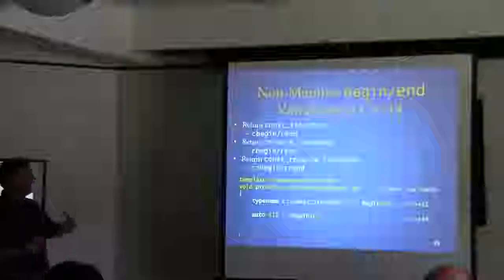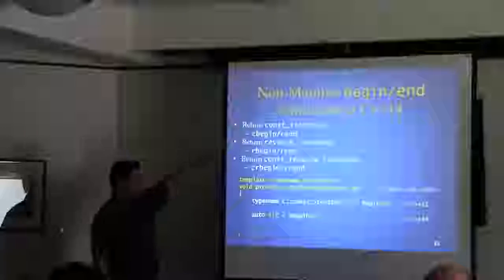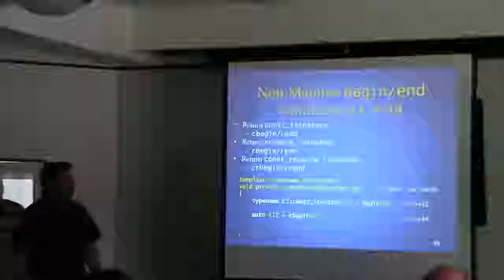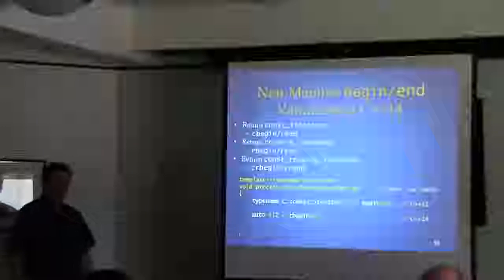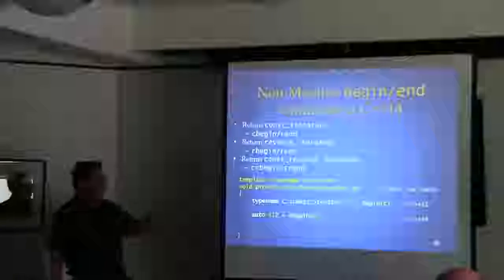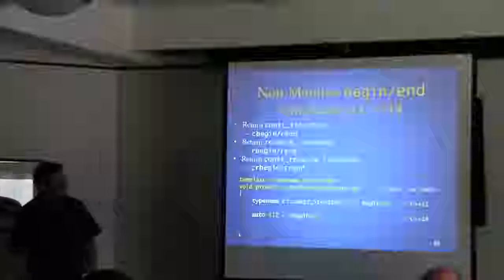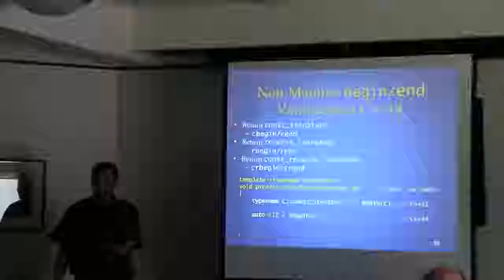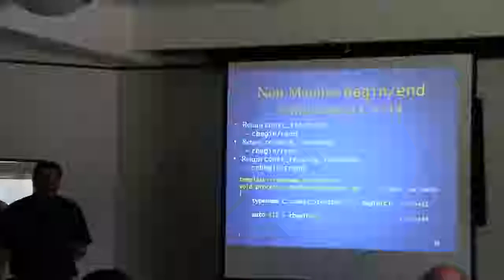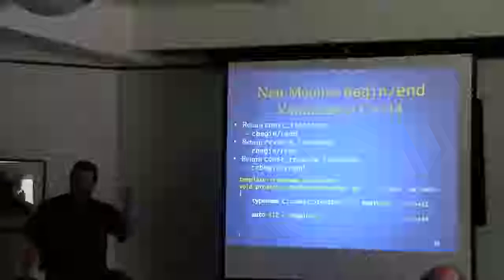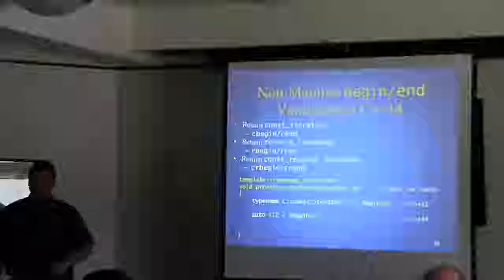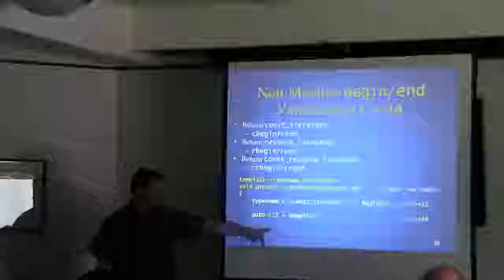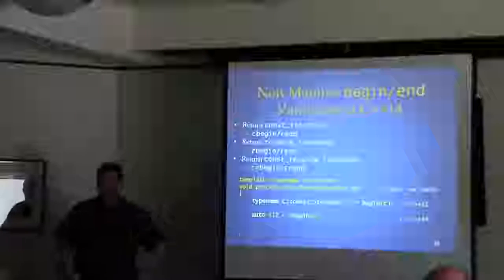Here's the first C++14 slide. C++14 adds the natural variations cbegin and cend as non-member functions. Now we can say cbegin, and if we have a non-const container but want a const iterator, that keeps us from having to declare 'Container::const_iterator'. Now we can just use auto with cbegin and it works.